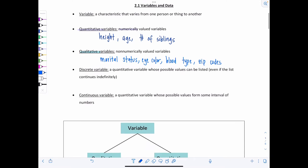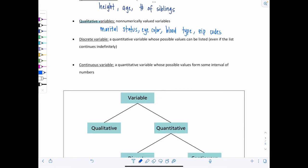And then we further distinguish between our quantitative variables, between discrete and continuous. So here's the thing you need to pay attention to. A discrete variable is a quantitative variable whose possible values can be listed, even if the list continues indefinitely. And the biggest thing to help you determine if something's a discrete variable is that it would involve a count of something.